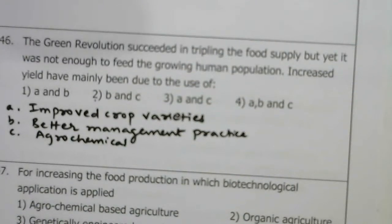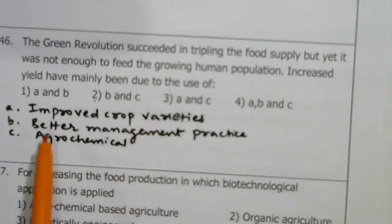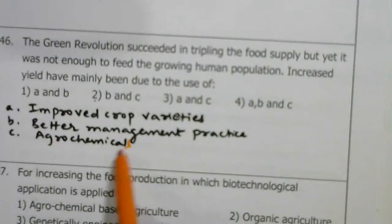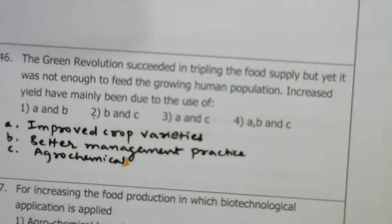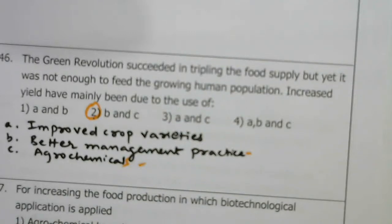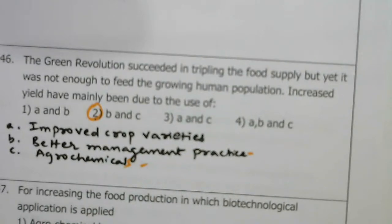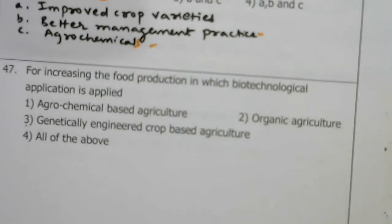The green revolution succeeded in tripling the food supply but was not enough to feed the growing human population. Increased yields have mainly been due to better management practices and agrochemicals — the second option is right.